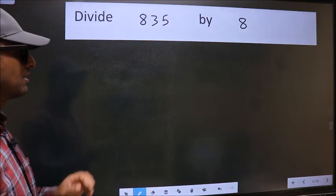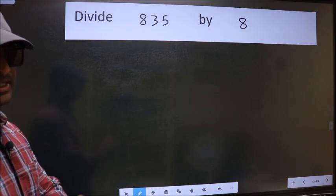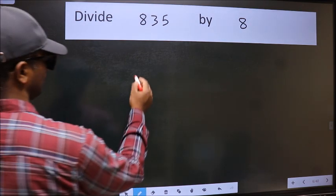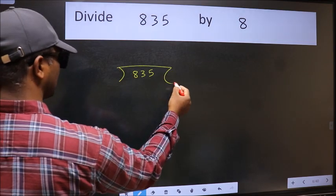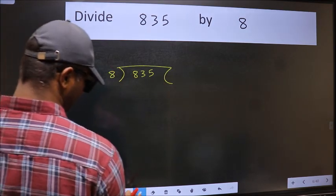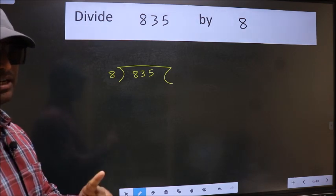Divide 835 by 8. To do this division, we should frame it in this way: 835 here and 8 here. This is your step 1.